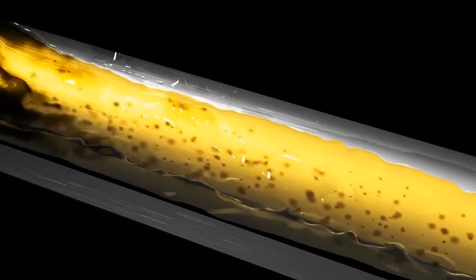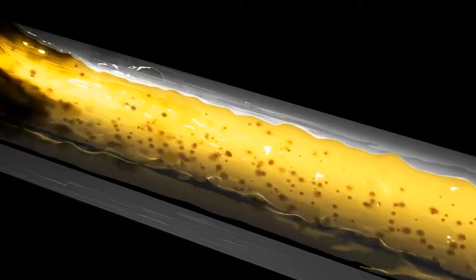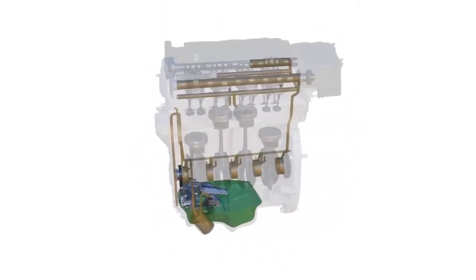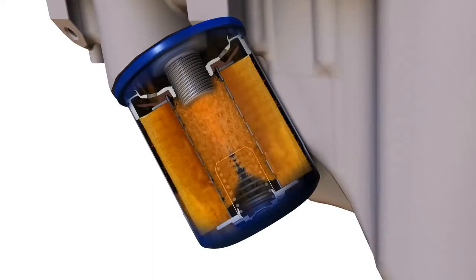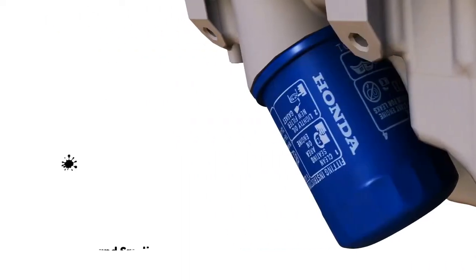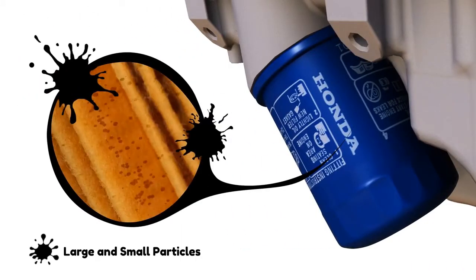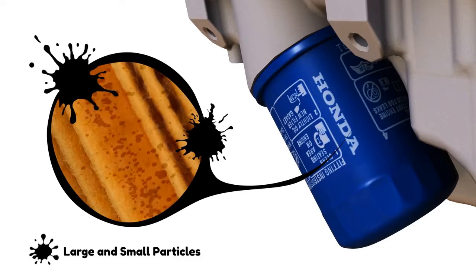Particles get trapped in the oil as it passes through the engine. These particles are primarily from mechanical wear. As the oil flows through the oil filter, large and small particles are caught in the filter material and removed from the oil.